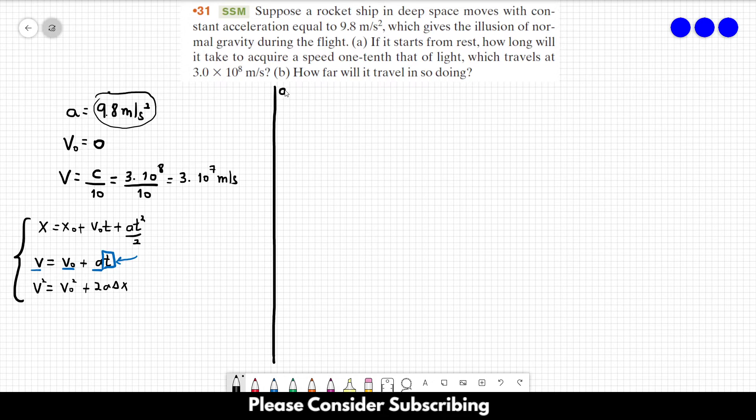So v = v₀ + at, which means t = (v - v₀)/a. The final speed is 3 times 10⁷, the initial is zero, and the acceleration is 9.8. So the answer is 3.1 times 10 to the 6 seconds. This is the answer to part A.